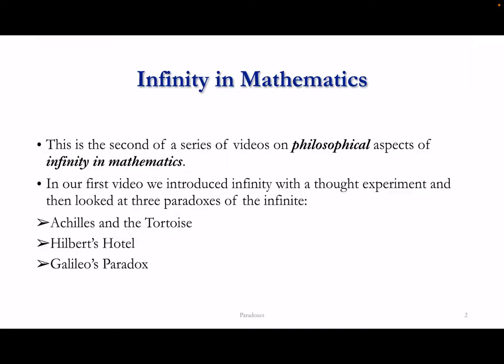This is the second of a series of videos on philosophical aspects of infinity in mathematics. In our first video, we introduced infinity by using a thought experiment and then looked at three well-known paradoxes of the infinite: the paradox of Achilles and the Tortoise, Hilbert's Hotel, and Galileo's paradox. These paradoxes highlighted the difficulties we face as finite beings in understanding the infinite.